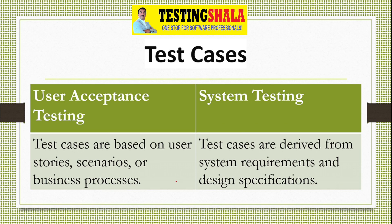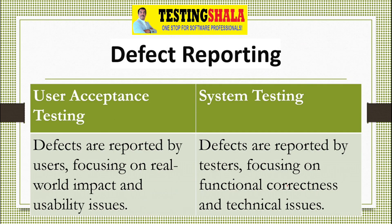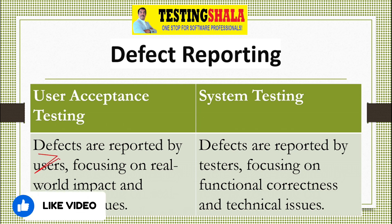The next difference is test cases. In user acceptance testing, test cases are based on user stories, scenarios, or business processes. In system testing, test cases are derived from system requirements as well as design specifications.